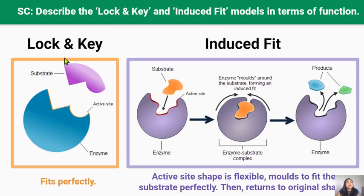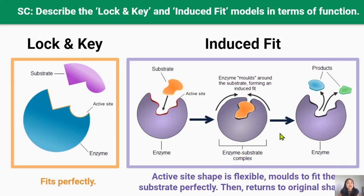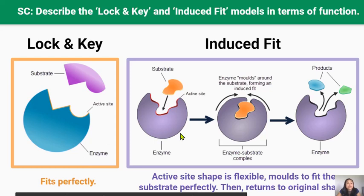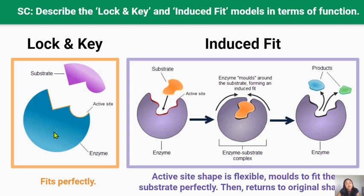With the lock and key model, it proposes that the shape of an enzyme's active site and the substrate fit together perfectly, just like a key fits into a lock. The enzyme has a specific shape that corresponds to the shape of that particular substrate. Whereas with the induced fit model, enzymes are thought of as a flexible structure that don't have the exact same shape as their substrate — instead, the enzyme molds around to fit the substrate perfectly, forming an enzyme-substrate complex. The important difference is that the lock and key model states the enzyme doesn't change shape when it binds to the substrate, whereas the induced fit model states that enzymes are flexible and can change shape to fit the substrate perfectly.